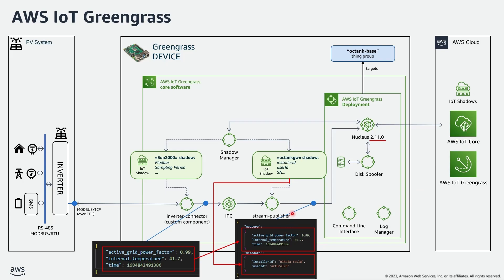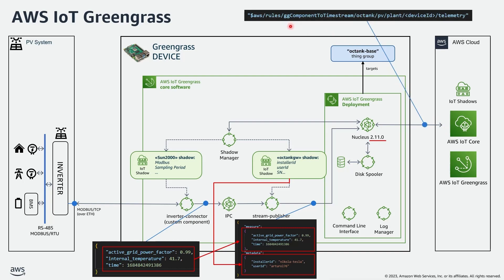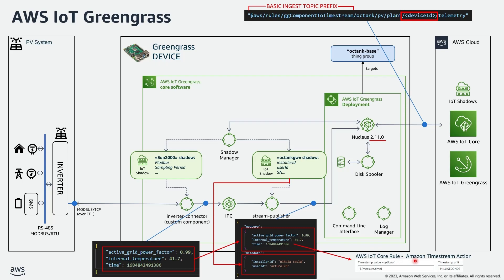The data is then consumed by another custom component — the stream publisher — which gets the data from the IPC and performs enrichment by adding metadata read from another shadow. This is an example of enrichment done on the device, in addition to cloud-side enrichment you could do using the AWS IoT Core rule engine. The resulting enriched message is published to AWS IoT Core over a basic ingest topic, where the basic ingest topic prefix is present and this field gets replaced with the actual device ID. Note that in case of lack of upstream connectivity, the disk spooler will persist all outbound messages on disk and send them in batch to AWS IoT Core once connectivity is restored. Having a timestamp on each data point is key, and this timestamp is also passed to Amazon Timestream through the AWS IoT Core rule.